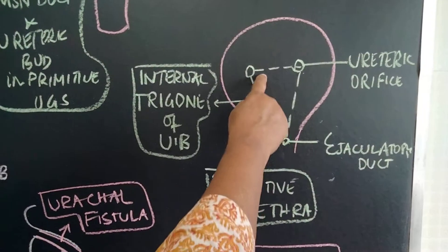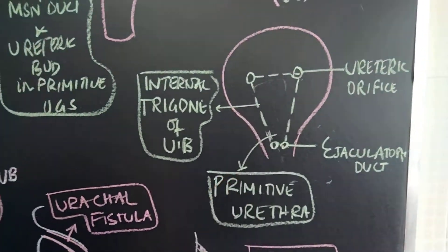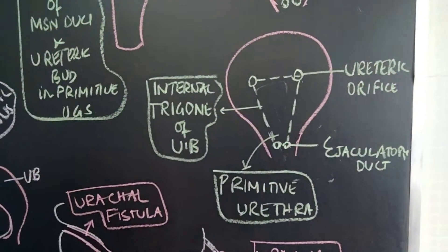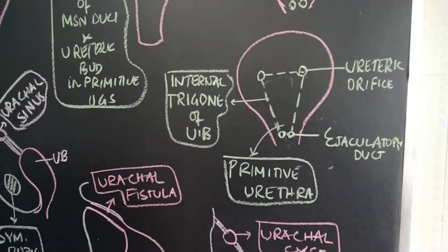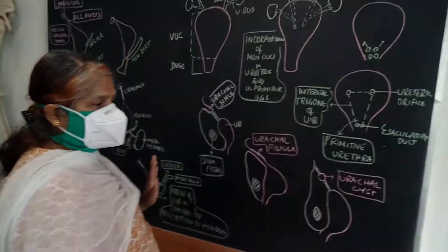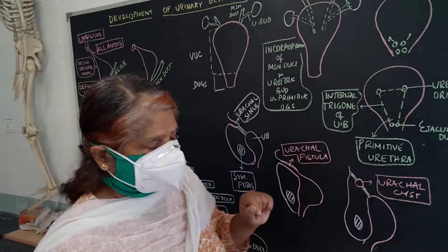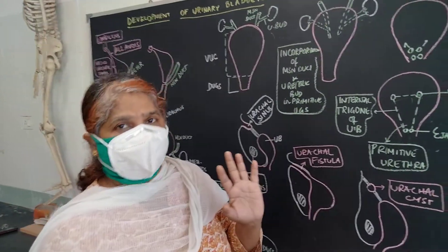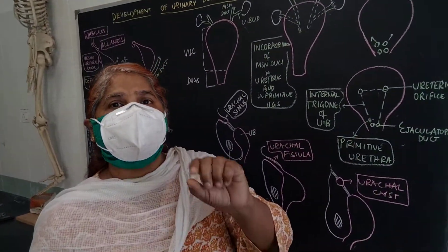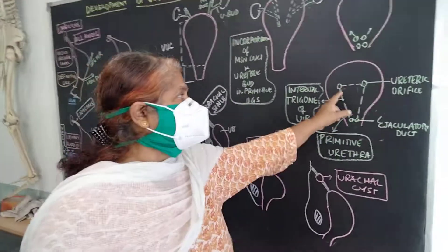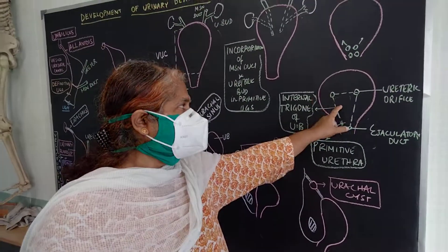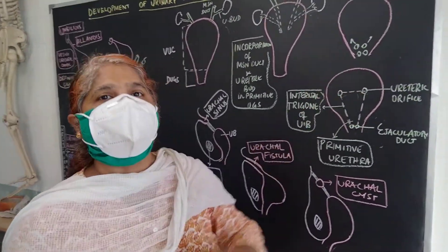So these two openings guard a part of the posterior wall of the urinary bladder, and that is called the internal trigone of the urinary bladder. The urinary bladder is developing from a part of the hindgut called the cloaca — that is endodermal in origin. And the mesonephric duct is developing from the mesoderm. So developmentally, the internal trigone is of mesodermal origin, while another part of the wall is developing from the endoderm.